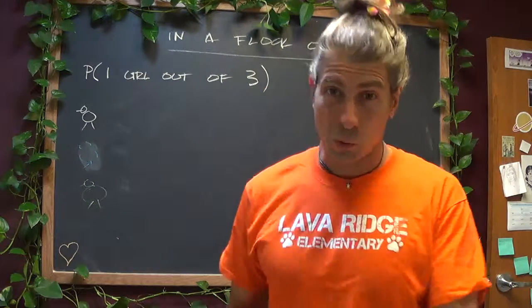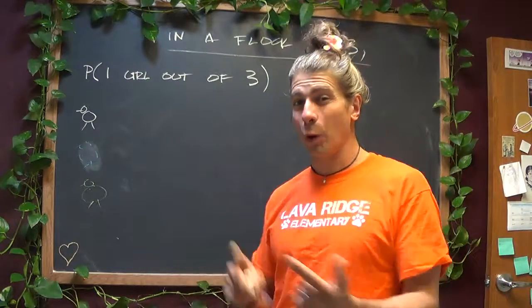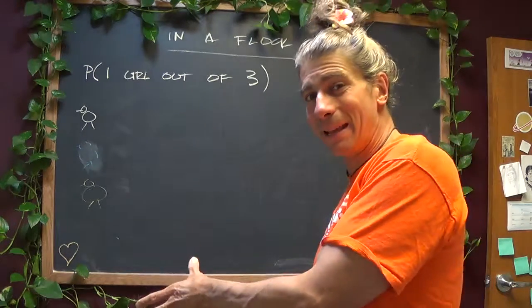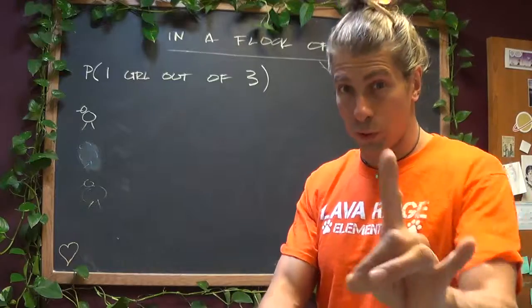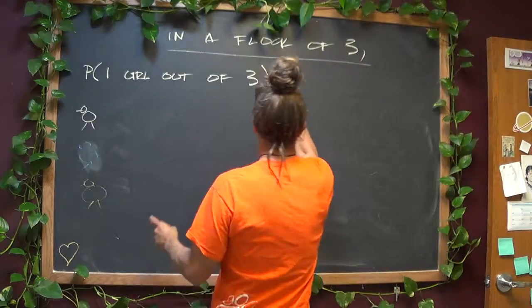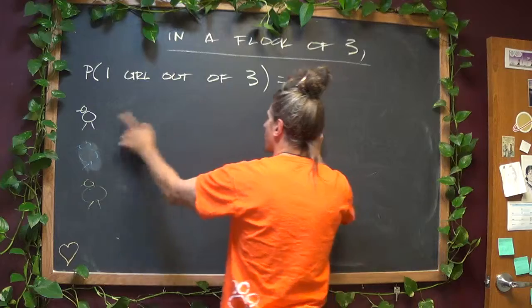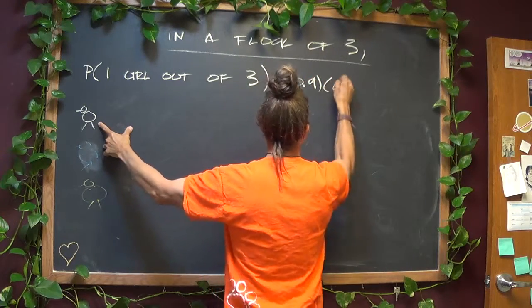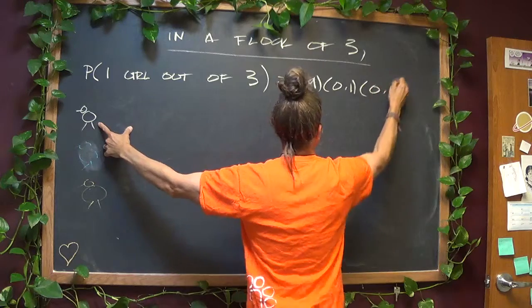Now, I don't know about you, but I heard the words 'and' and 'or' quite a bit in that statement. So what I want to do is I want to write down the mathematics that pertains to those words. So I said, if I want one girl out of three birds, that means either she's a girl and he's a boy and he's a boy,